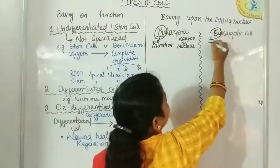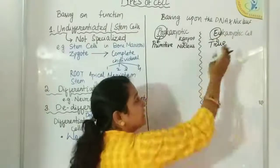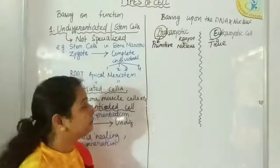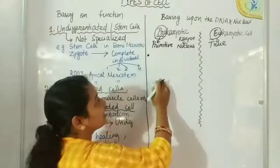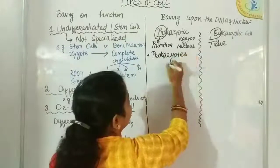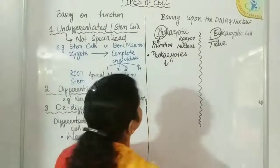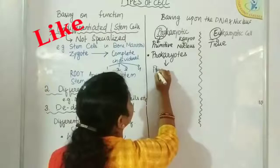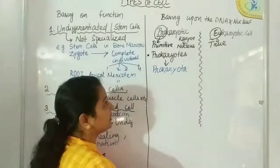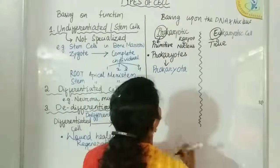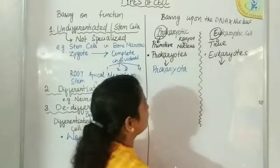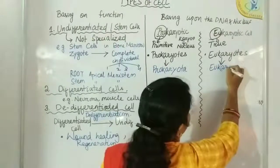'Eu' means true and 'karyon' means nucleus. Eukaryotic cells have a true or definite nucleus with packed DNA inside the nucleus. So those are eukaryotic cells. Organisms having prokaryotic cells are called prokaryotes and are placed under the super kingdom Prokaryota. Organisms having eukaryotic cells are called eukaryotes and are placed under the super kingdom Eukaryota.